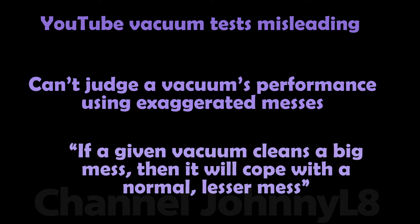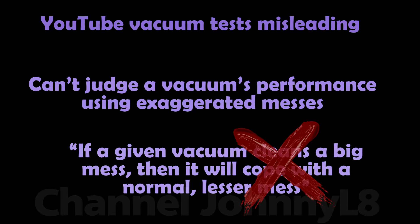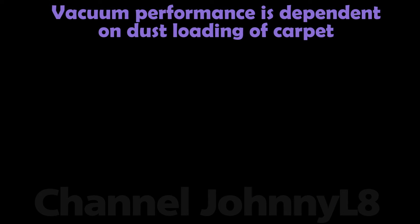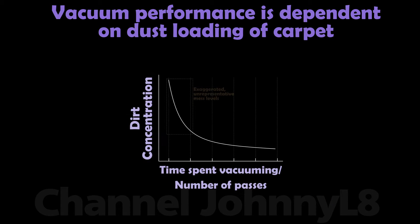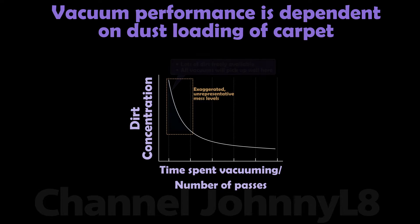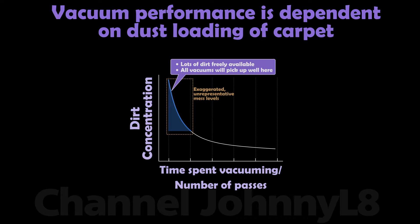It's incorrect logic to claim that if a given vacuum cleans an exaggerated carpet mess well, at least visually, then it will automatically clean a lesser, normal mess equally well or better because the mess is less severe. Any vacuum will always remove lots of particles when the concentration is high, such as in exaggerated messes, and therefore will visually look like a good performer. Starting a test with lots of dirt just puts you higher on the concentration curve, well outside normal levels — any vacuum can easily remove lots of dirt in that case, simply because there's lots of freely available dirt to remove.